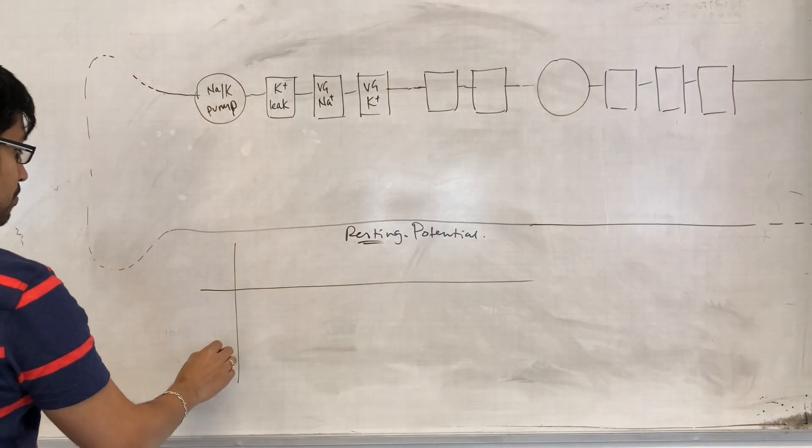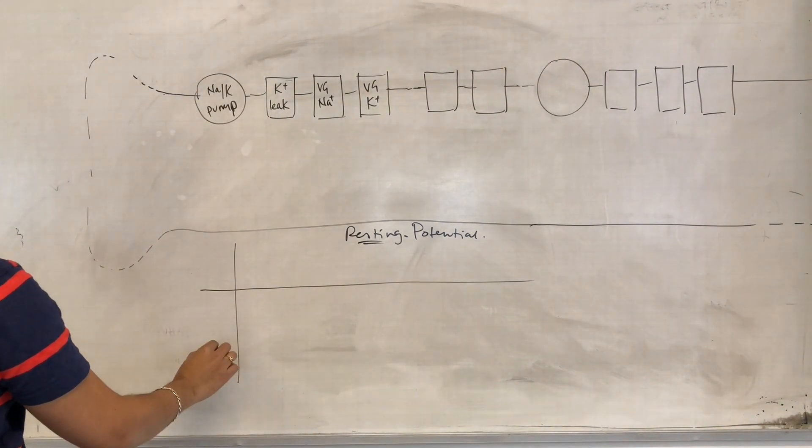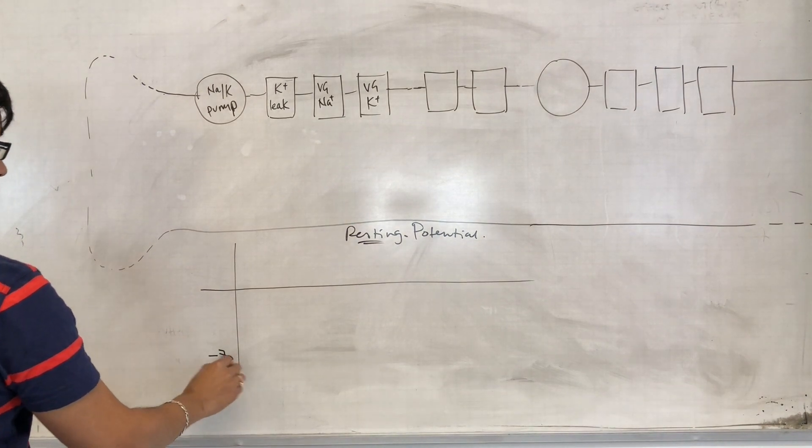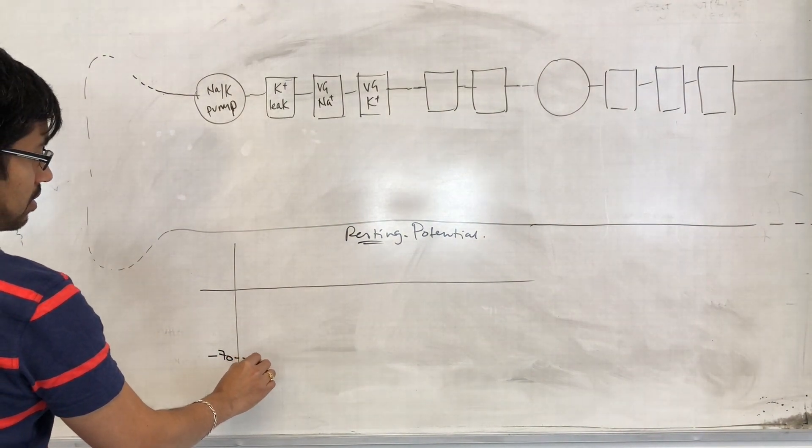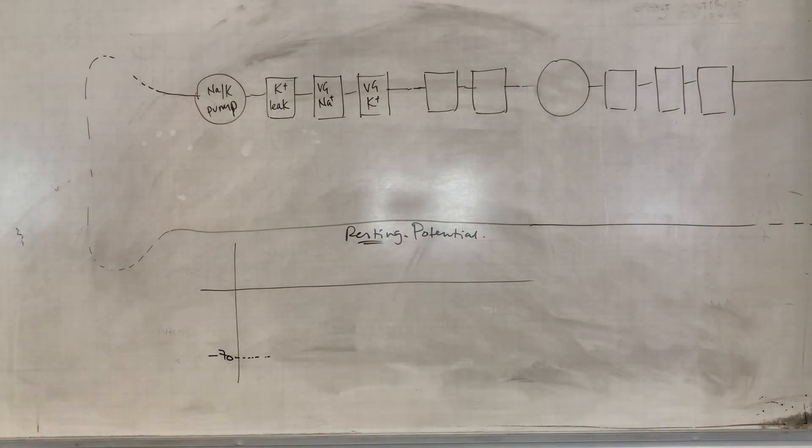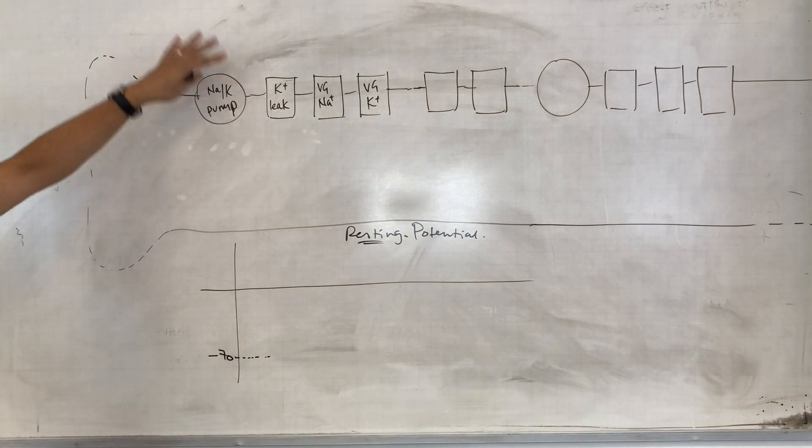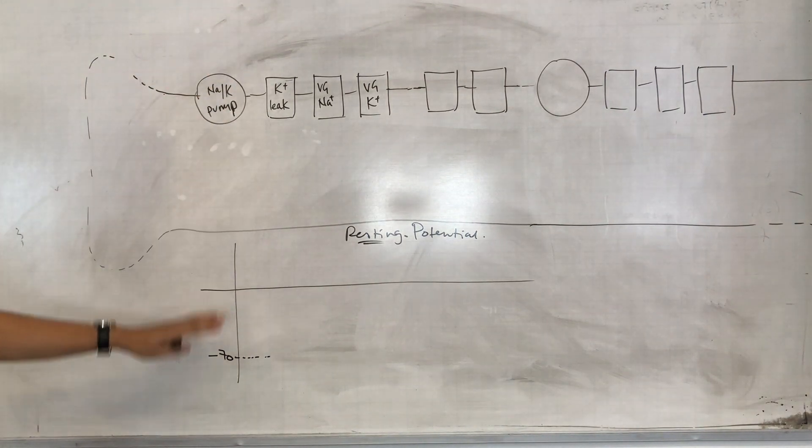The resting potential of a neuron is minus 70 millivolts. That's the potential difference, so that's essentially the difference in charge between the inside of the cell and the outside of the cell.